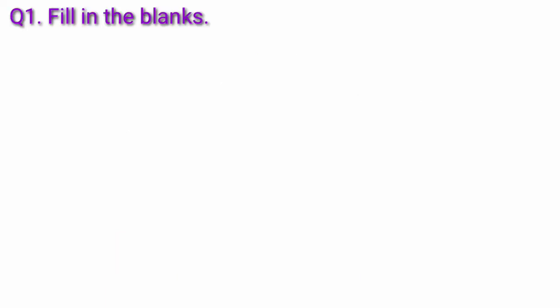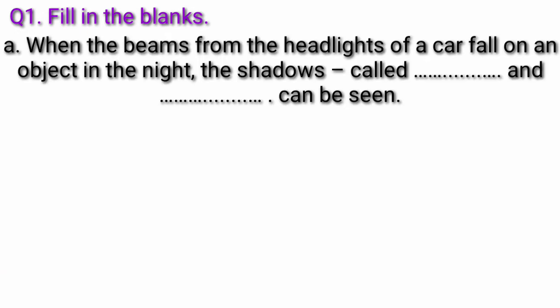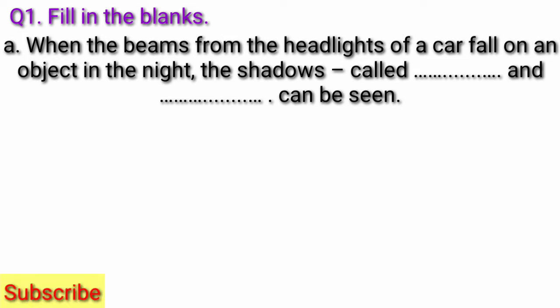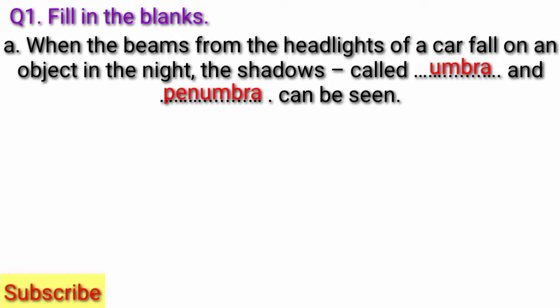Question 1. Fill in the blank. Question A: When the beams from the headlights of a car fall on an object in the night, the shadows called fill in the blank and fill in the blank can be seen. Answer: When the beams from the headlights of a car fall on an object in the night, the shadows called umbra and penumbra can be seen.